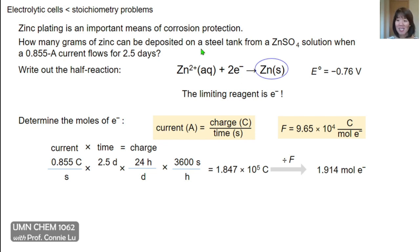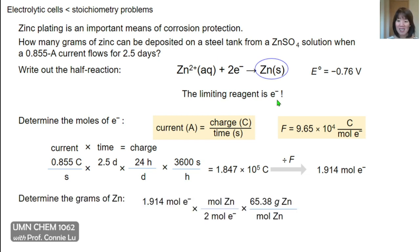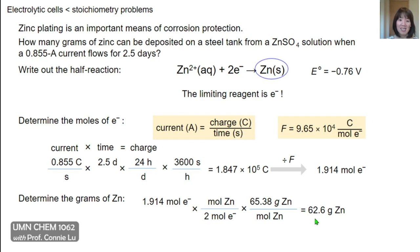With the moles of electrons, we go back to the balanced equation and solve for grams of zinc. We take the moles of electrons and convert to moles of zinc using the 1:2 molar relationship, then multiply by the molar mass of zinc metal. This finally gives us an answer that we will deposit 62.6 grams of zinc metal.